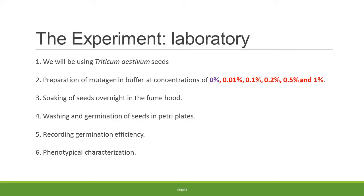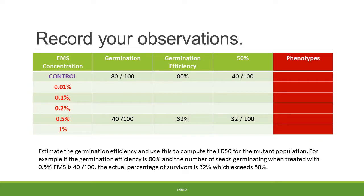One of the experiments you can consider performing in the laboratory involves the use of a seed which is rarely germinated and the use of a mutagen such as EMS prepared in a suitable buffer with varying concentrations. All of these experiments must be conducted in a fume hood with the use of suitable protective gear as EMS is a chemical mutagen. Seeds must be soaked overnight in the mutagen, following which they will be washed and germinated. The germination efficiency is one of the aspects which needs to be recorded, followed by phenotypical characterization. For each concentration of EMS, one needs to record the germination frequency, the germination efficiency, and the dosage at which 50% of the mutants survive.